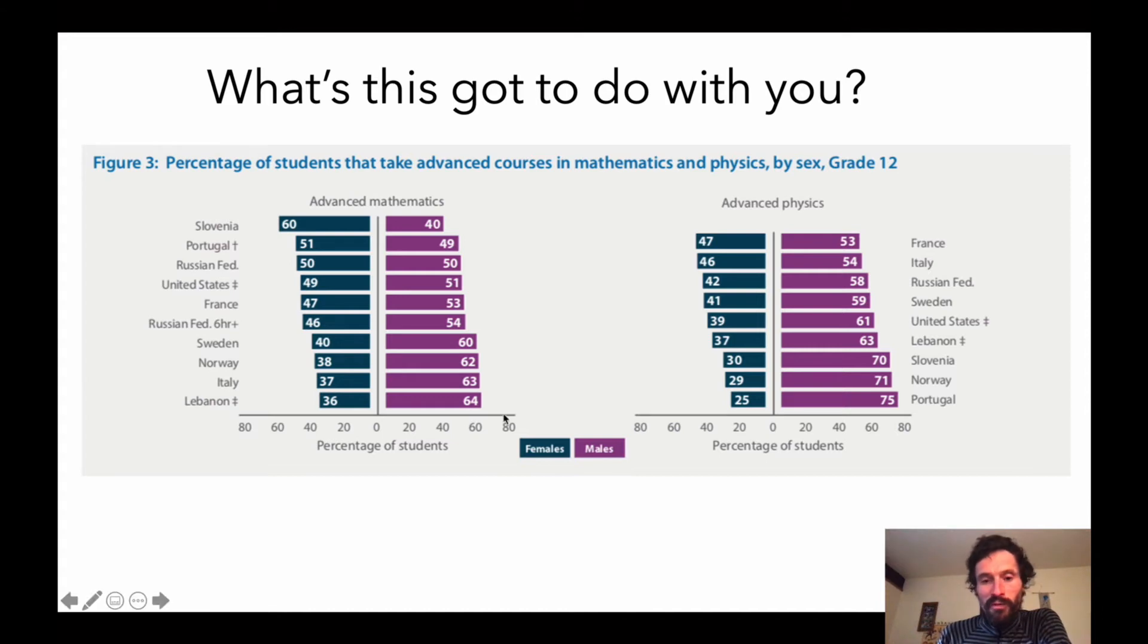Australia, however, is at the bottom of both of these tables. We have this split here equal with Lebanon for advanced maths, and this split here equal with Portugal for advanced physics. Consequently, anyone who's come through year 12 in Australia studying maths and physics will be used to seeing a large fraction of males around them. We have a severe gender discrepancy in Australia, and it wouldn't be the case if you'd grown up in some of these other countries. It's a problem that is not particular to us, but is particularly acute in Australia.